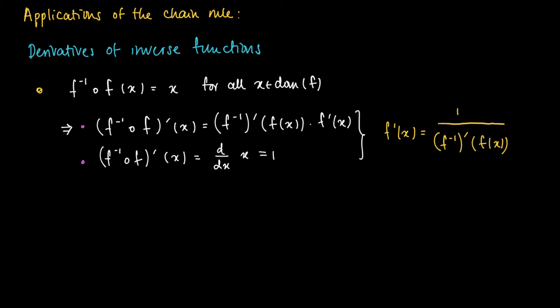If we write y is f(x), then we find that this equals 1 over the derivative of the inverse of f evaluated in y.